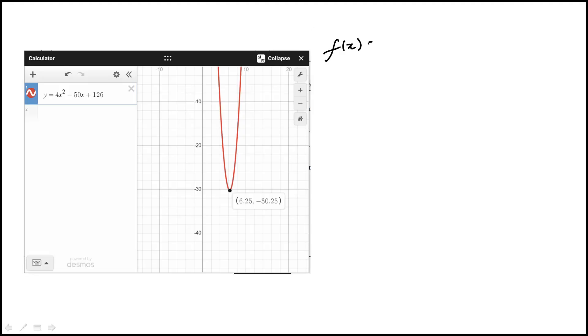So in this question, we're given this function f of x, which is 4x squared minus 50x plus 126. We're asked to find the value of x for which the function reaches its minimum.